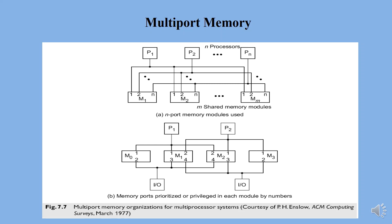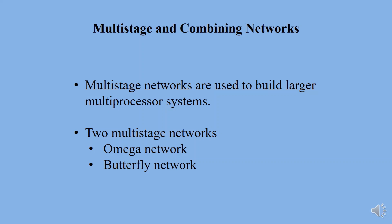A multi-stage network is capable of connecting any input terminal to any output terminal. Multi-stage networks are constructed using shuffle exchange switching elements, which are essentially 2×2 crossbars. Multiple layers of these elements form the network. Two notable multi-stage networks — the omega network and the butterfly network — have been built into commercial mechanisms.